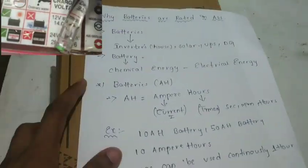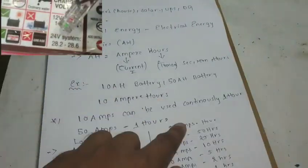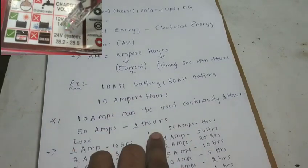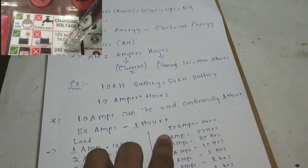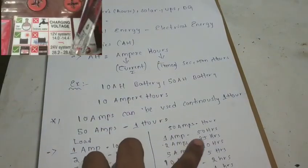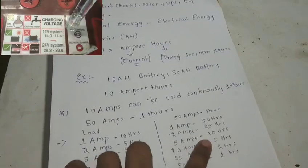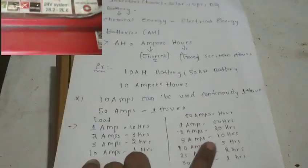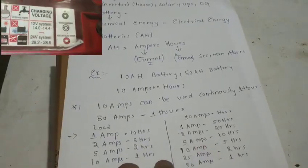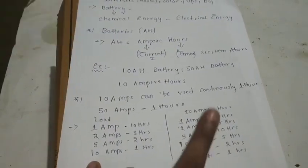If it is a 50Ah battery: at 1 amp it lasts 50 hours, at 25 amps it lasts 2 hours, at 5 amps it lasts 10 hours. For this rating, at full load it is 1 hour.